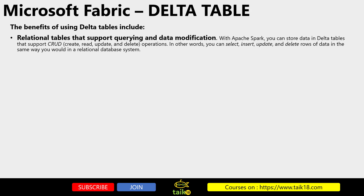What are the benefits of using Delta tables? First, relational tables that support querying and data modifications. With Apache Spark, you can store data in Delta tables that support CRUD — that is, Create, Read, Update, and Delete operations. In other words, you can select, insert, update, and delete rows of data in the same way you would in a relational database system.